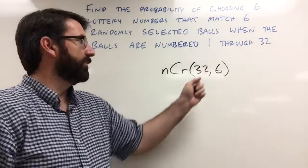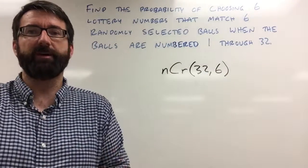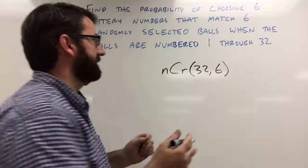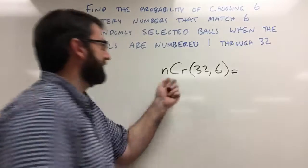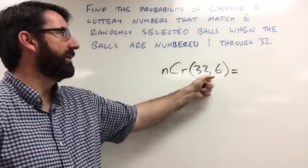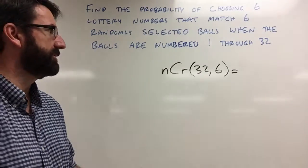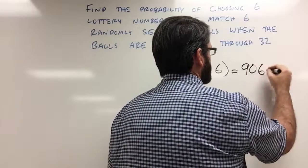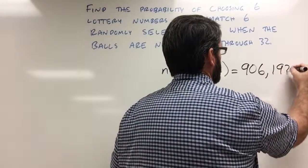So out of 32 balls, we're choosing 6 and we want to figure out how many different ways can that end up. And if we plug that into our calculator and choose r of 32 comma 6, we're going to get that this is 906,192.